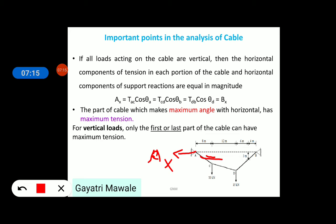This is equal to, equal in magnitude with say, this is TAC cos theta. Further, it is equal to TCD cos theta B and is equal to TBD cos theta B is equal to BX which is horizontal component of support reaction at B point. So, all the horizontal reactions are equal in magnitude for vertical loadings.